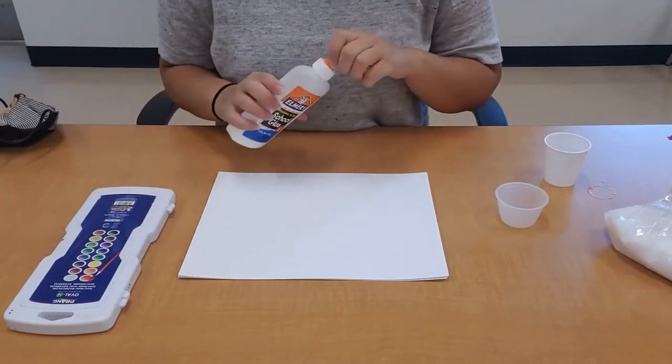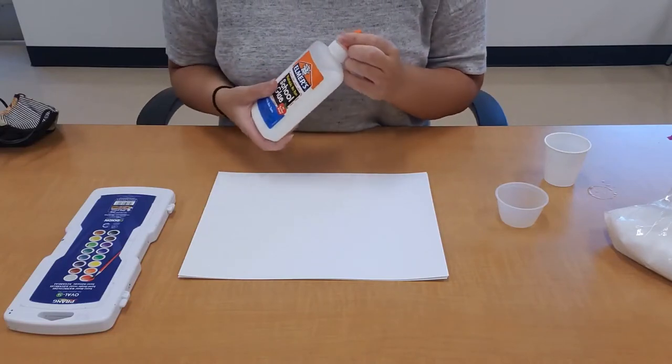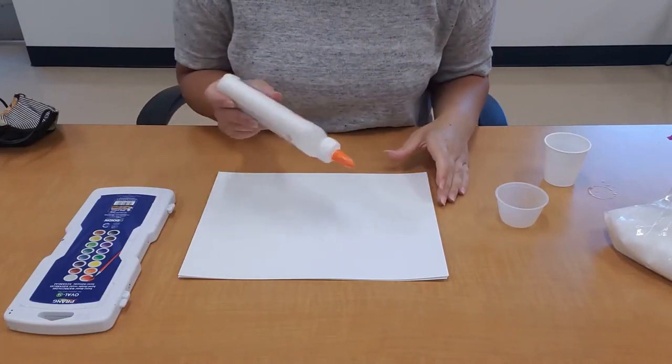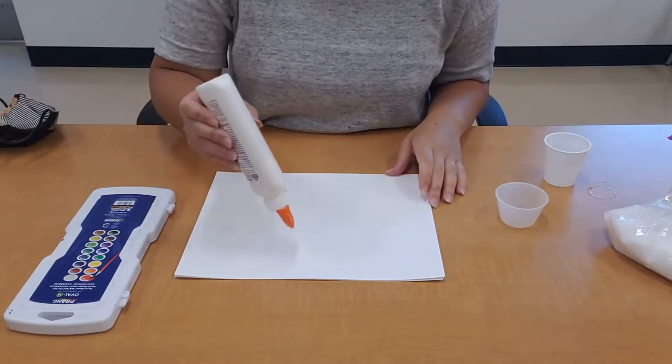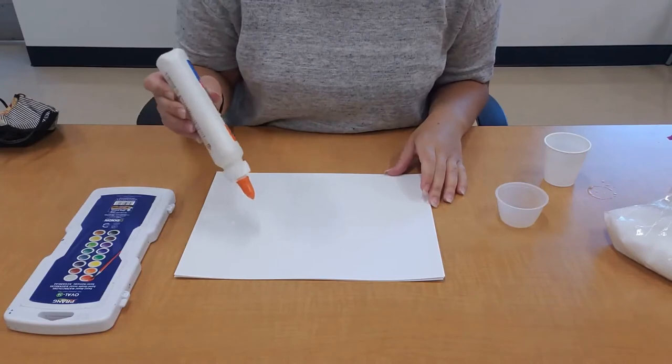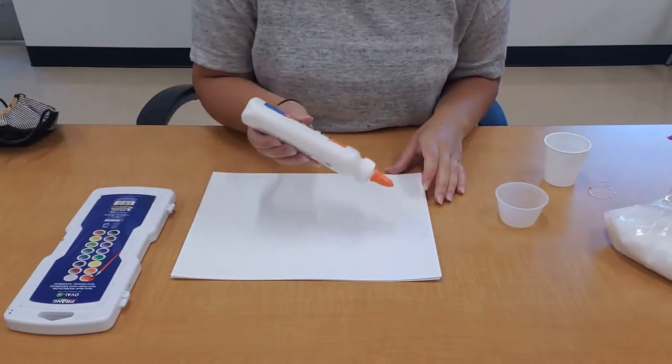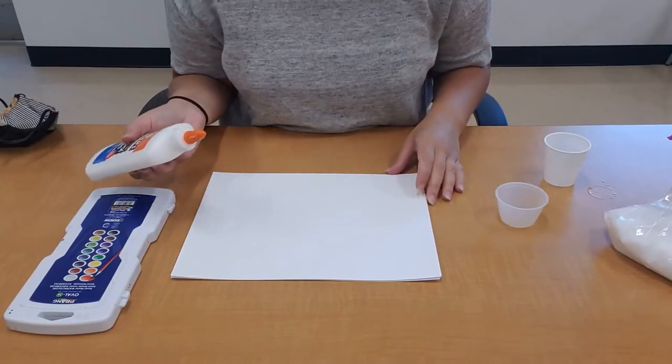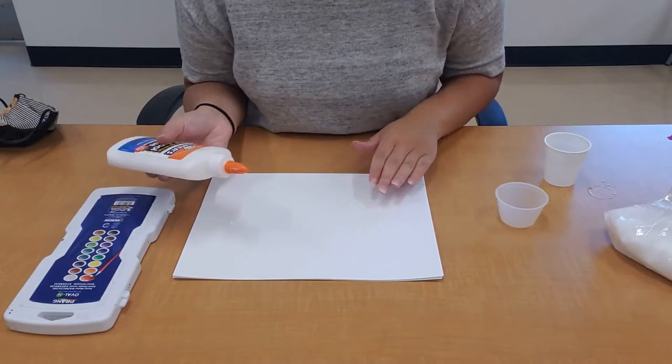You're gonna want to take your glue and what you're going to do with the glue is pretty much draw with your glue. So if you want to make a sun, you'll draw a circle and some sun rays. If you want to make a heart, then you'll make a heart with your glue. This will be a little bit hard to see because the glue is white and my paper is white, but pretty soon you'll see what I mean.